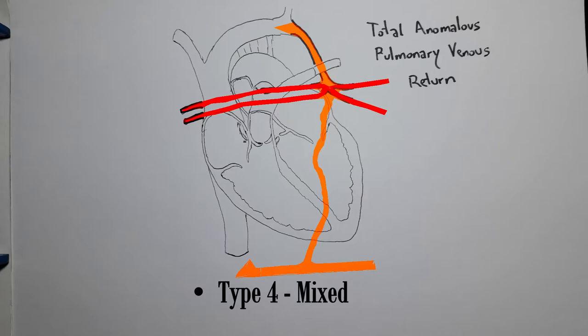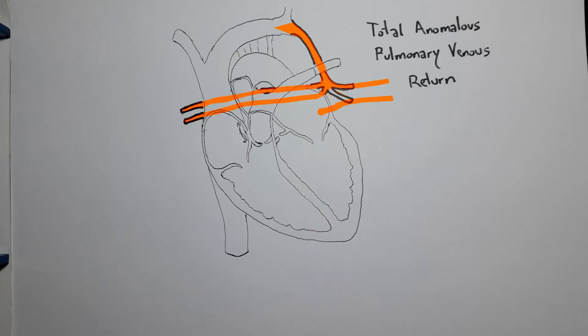Someone may ask: what if some of these pulmonary veins actually drain into the left atrium as they should? Is it a mixed type of total anomalous pulmonary venous return? Well, no, of course not — then it's a partial anomalous pulmonary venous return. If at least one of the pulmonary veins is draining correctly, then it's not a total malformation, it's a partial drainage problem.